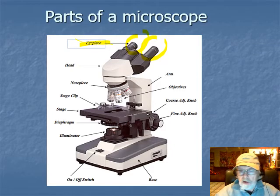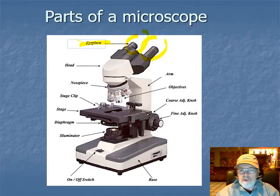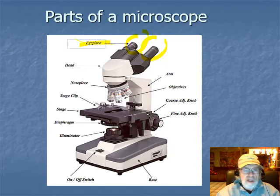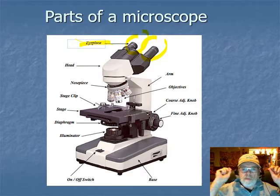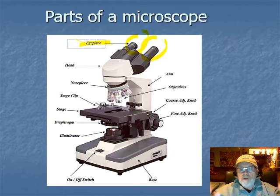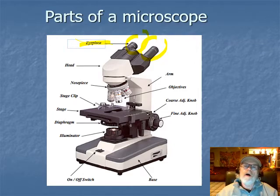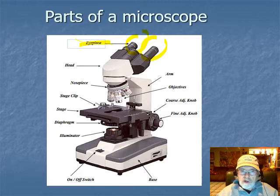Inside the eyepiece are what are called oculars. They come in different powers - most microscopes you'd probably use have either a 10x or 20x magnification. They can just be swapped out; you pull them out and pop the new ones in.